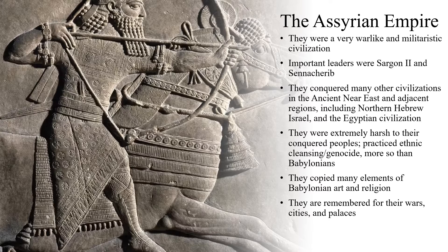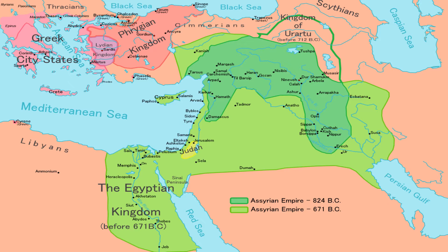The Assyrians copied many elements of Babylonian art and religion, making them more warlike. The Assyrians are best remembered for their wars and their cities and palaces that they built using the spoils of the peoples they conquered. Here is a map showing the extent of the Assyrian Empire — they expanded well beyond Mesopotamia, through the Levantine region, and all the way to Egypt.